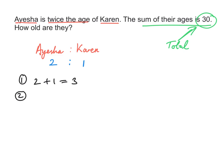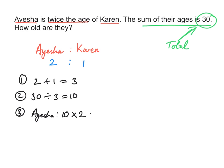Step two: divide the total by the sum of the ratios — 30 divided by 3 is 10. Step three: multiply this answer by the quantity of each ratio. For Aisha, her age will be 10 times 2, which is 20. For Karen, it's 10 times 1, which is 10. So Aisha's age is 20 and Karen's age is 10.